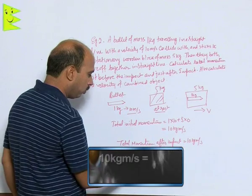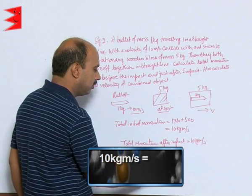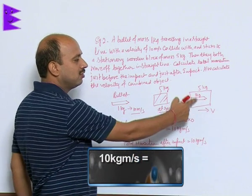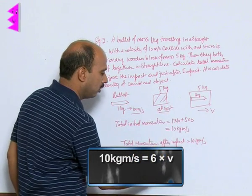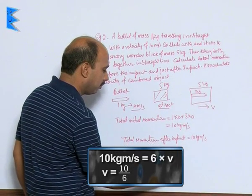See here, we can write total momentum that is 10 kg meter per second is equal to total momentum of this. So total mass is how much? 6 kg now into velocity. So you can write v is equal to 10 by 6,